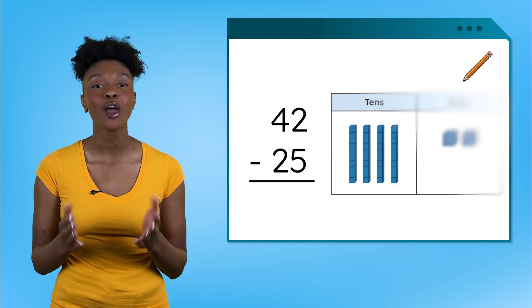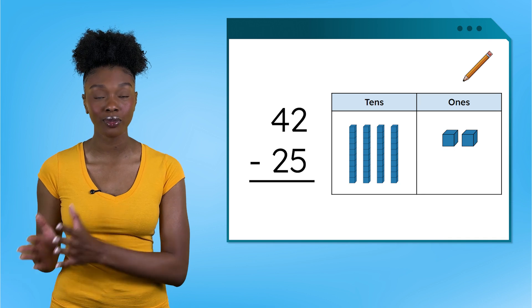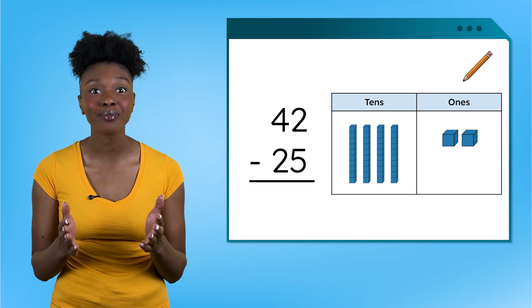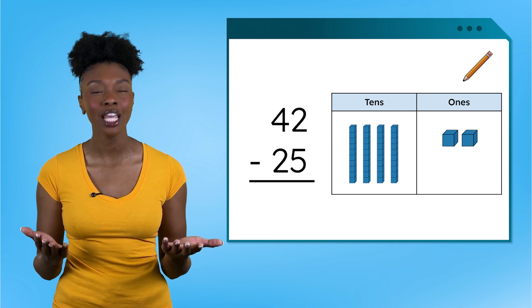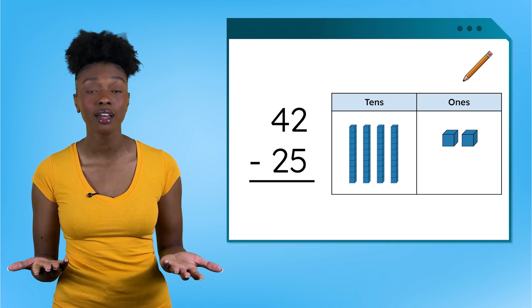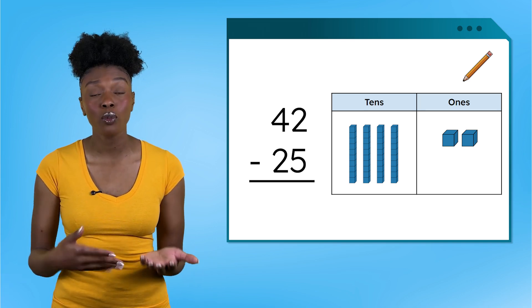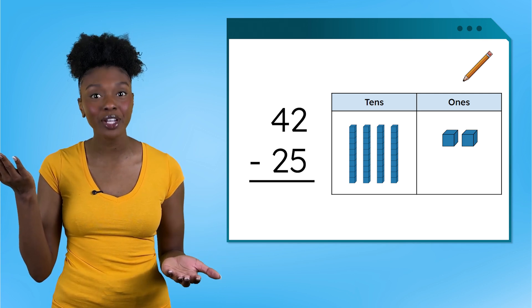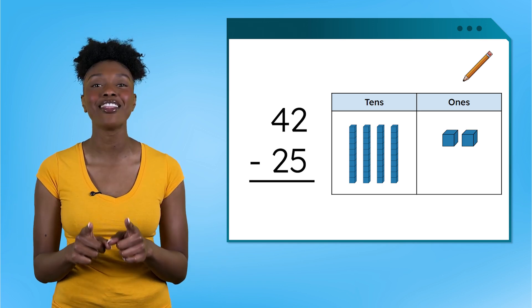It seems like our quest will need an extra step. Let's look at a similar problem to see if we can figure this out. Grab your pencil and try this one with me in your guided notes. We have 42 minus 25 written vertically, and this time I added base-10 blocks to help us see what's happening. In subtraction, we start with the bigger number and take away the smaller one, so we only need to build the bigger number with our blocks. In this problem, that's 42.